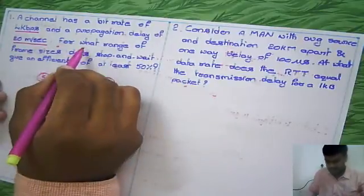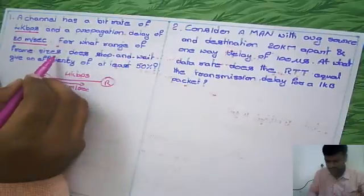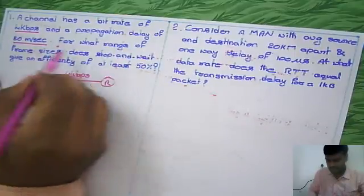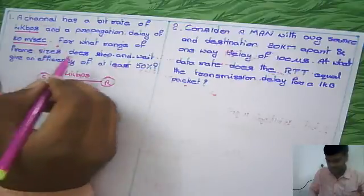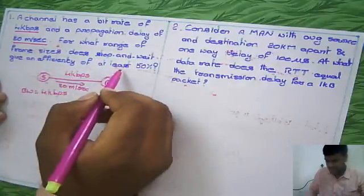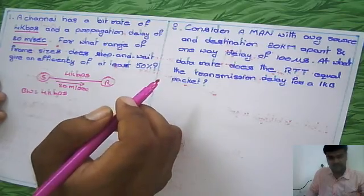So he is asking for what range of frame sizes - length of the frame - does the stop-and-wait give an efficiency of at least 50%? If you observe the earlier problem...